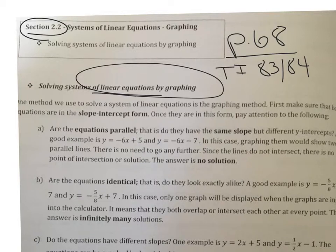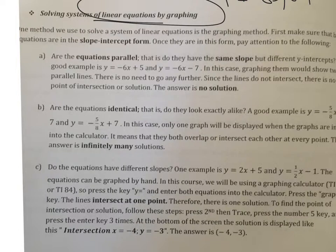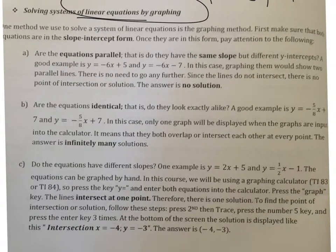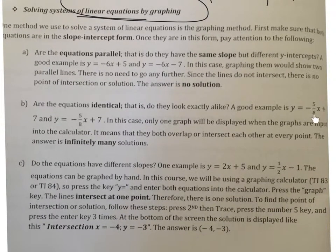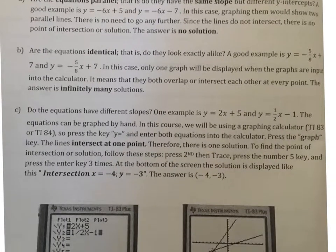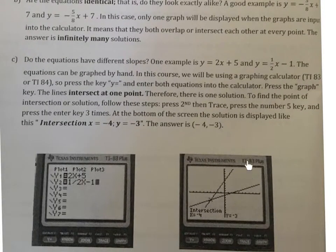When solving any system of linear equations, there are only three options for your solution. First, the equations may show parallel lines — same slope, no solution. Second, the equations may be identical, meaning they're the same line, giving infinitely many solutions. Third, if they're not parallel or identical, they'll intersect at one point, giving one solution. Your calculator can help you identify where those two lines intersect.